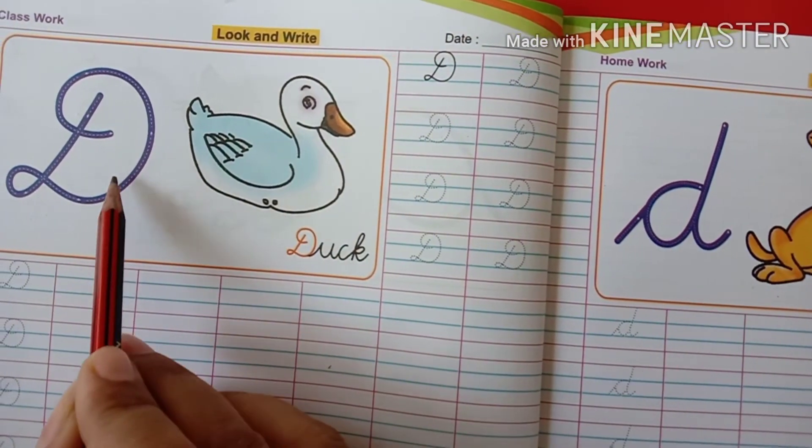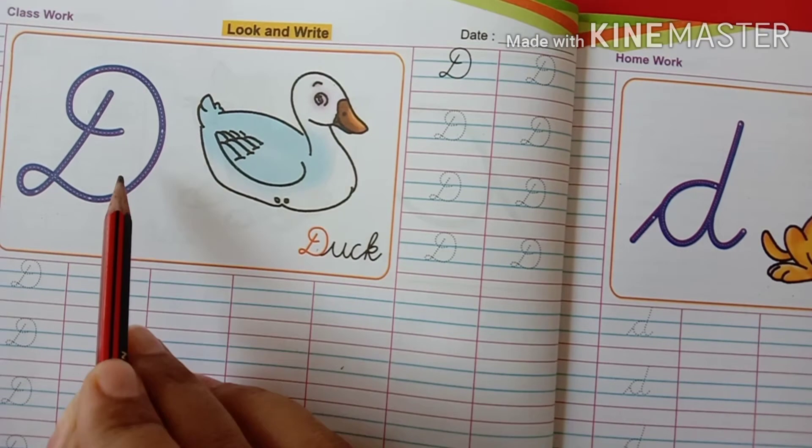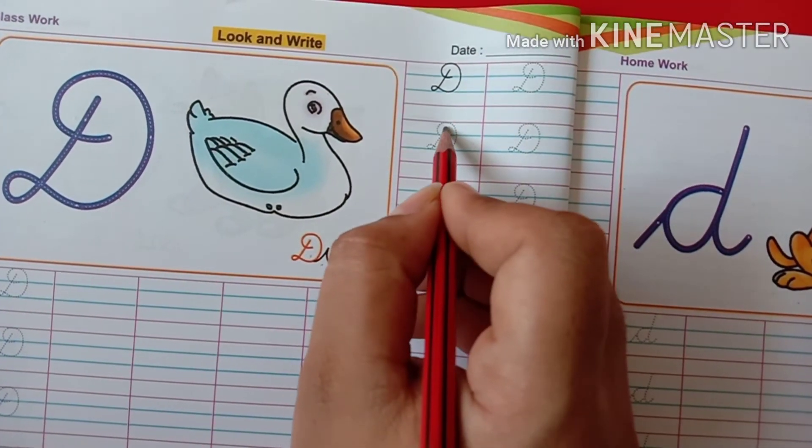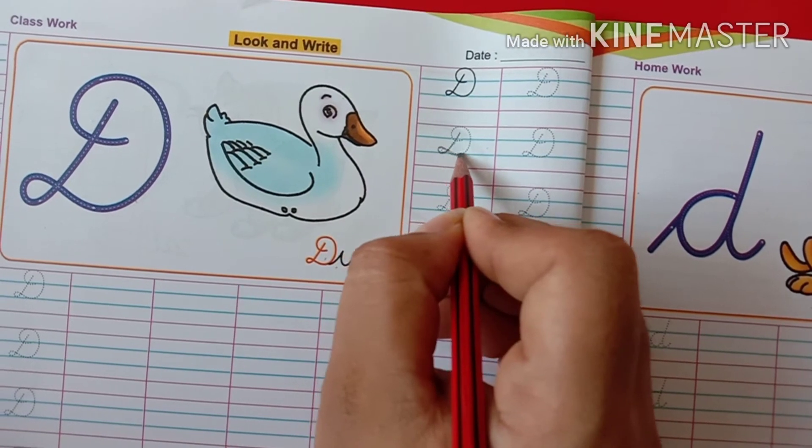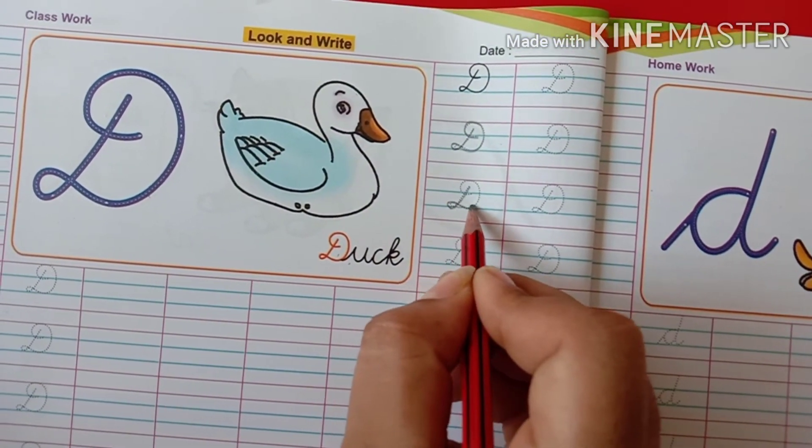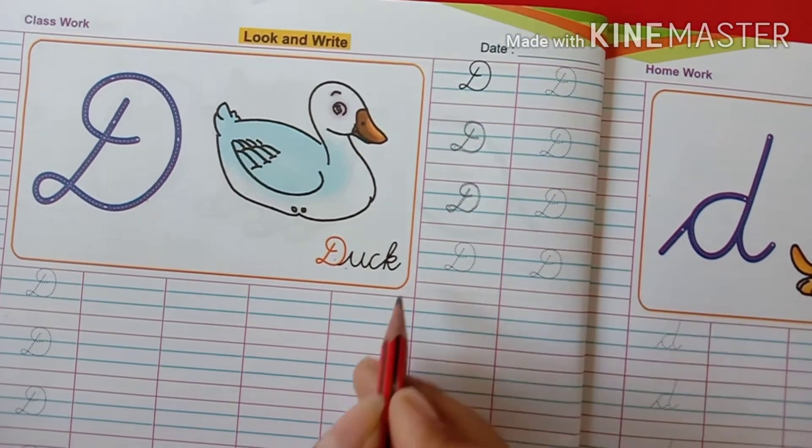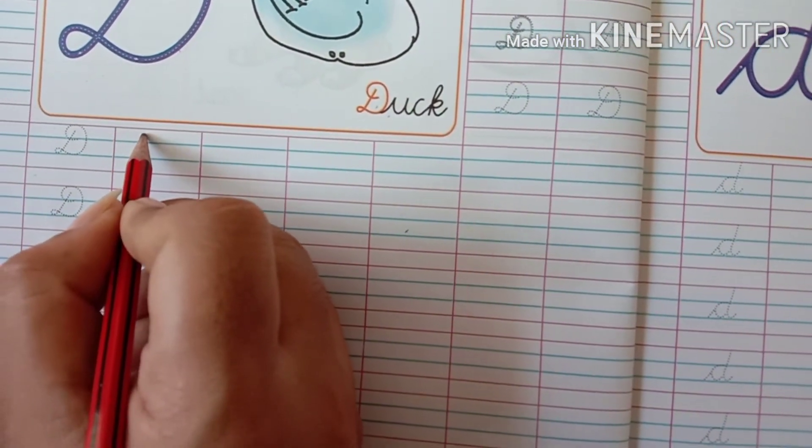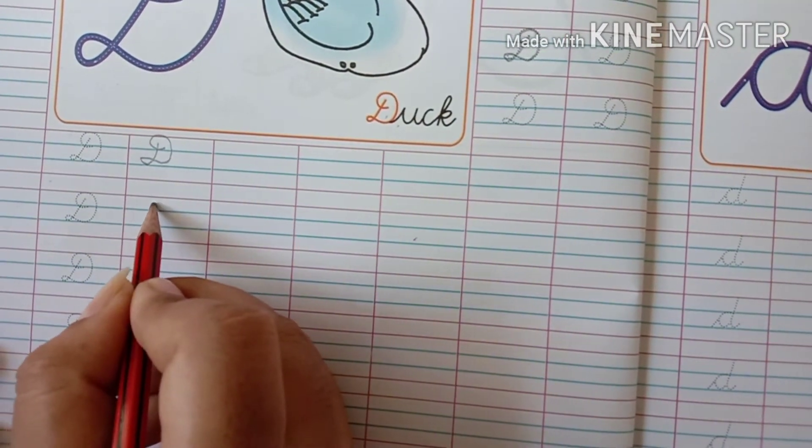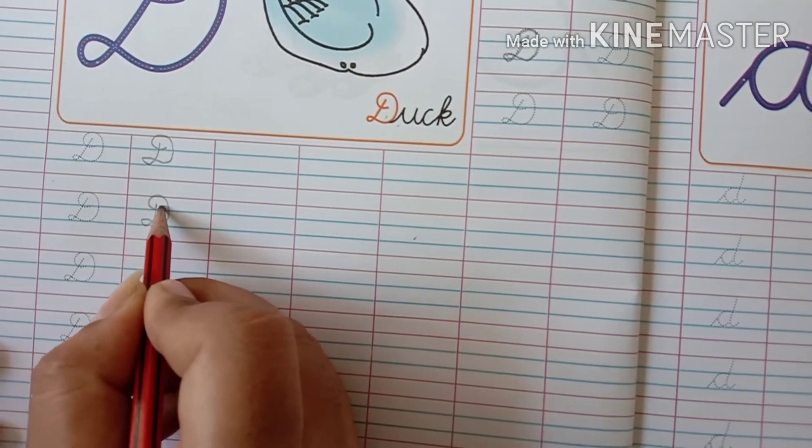So kids, look here. D for dog. We will write here capital D. Write this. We will write on dots. Now we will write without dots. Capital D.